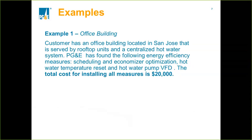This first example is on an office building where the customer is located in San Jose, served by rooftop units with a centralized hot water system. PG&E, through an energy efficiency audit, has found the following energy efficiency measures: scheduling and economizer optimization, hot water temperature reset, and hot water pump VFDs. The cost to upgrade this equipment for all the measures is around $20,000. Now transferring over to Melina to show how to go step-by-step on building this in the HVAC tool and generating energy savings and payback information.